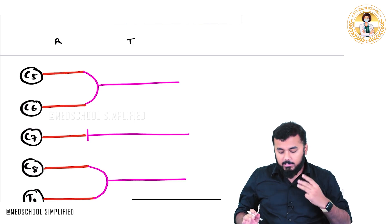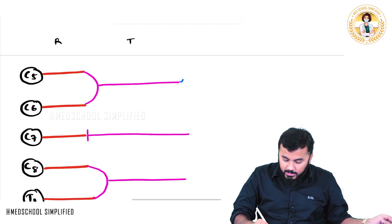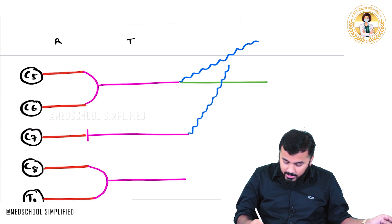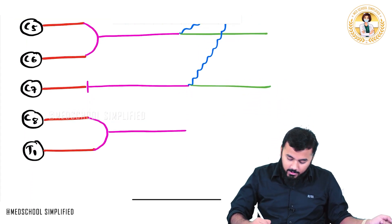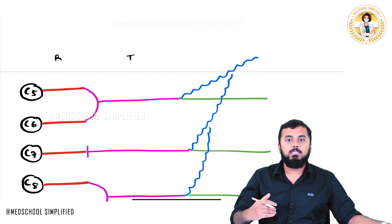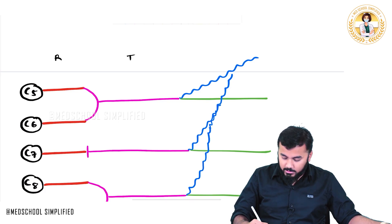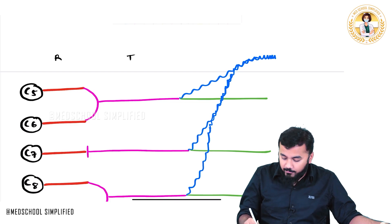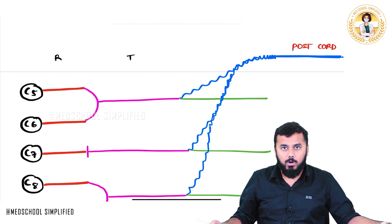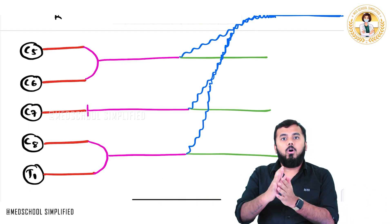Each trunk will divide into two branches — one called anterior branch and another called posterior branch. So we have six divisions total: anterior and posterior from each of the three trunks. These posterior branches are called posterior divisions, and the green lines are the anterior divisions.